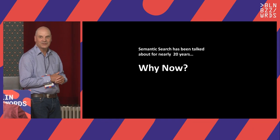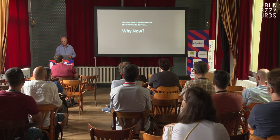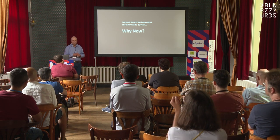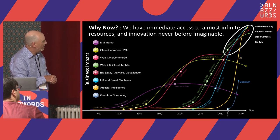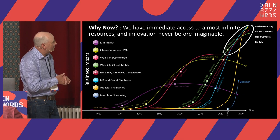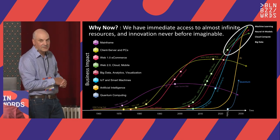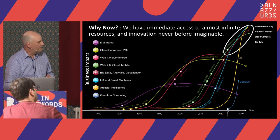If you've been in the industry as long as I have, you'll know semantic search has been talked about for over 20 years. So why haven't we been able to deliver on its promise until now? Looking at this graph, with time on the x-axis and business impact on the y-axis, you can see in the top right corner a convergence of technologies. It's largely due to this convergence that we're now able to move forward with semantic search features and functionality.